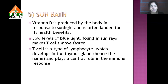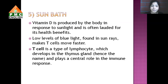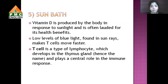The next tip is sun bathing. Most of us are not exposed to enough sunlight — we get up late, go directly to the car, enter the office, and come back at night. Vitamin D is produced by the body when it is exposed to sunlight. Research says that sunlight has low levels of blue rays, and whenever we get exposed to these blue rays, T cells move faster.